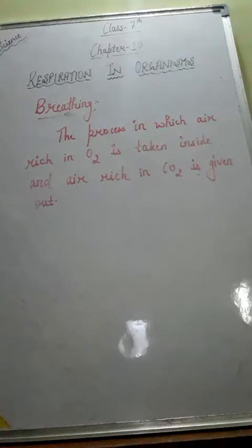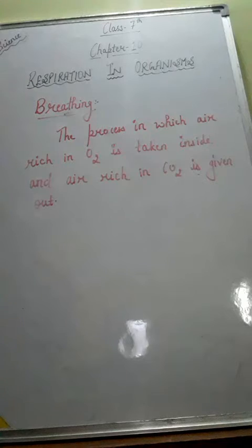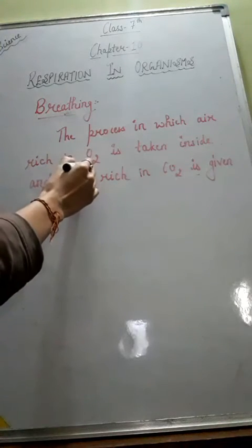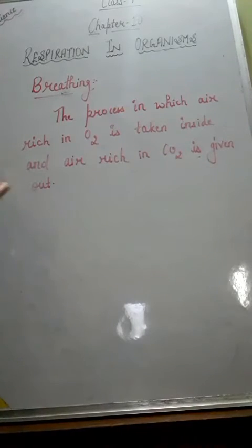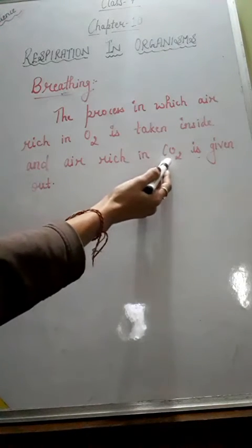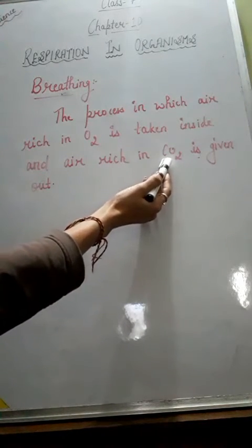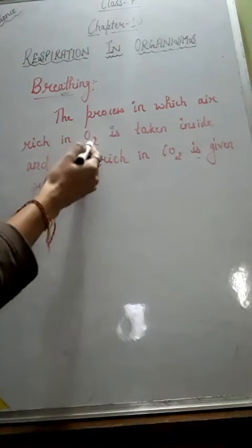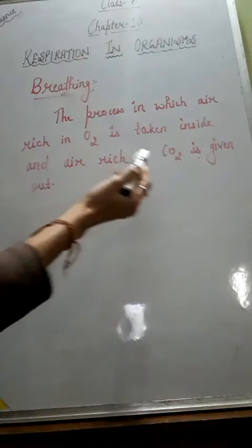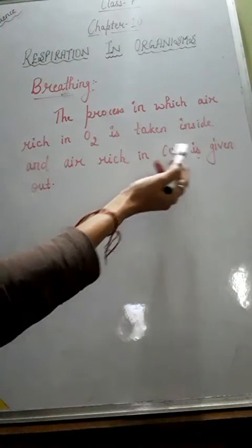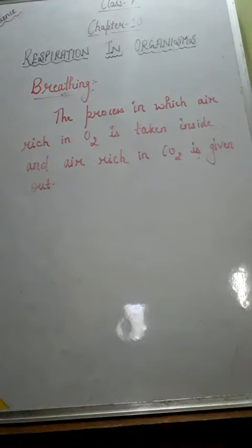So what is breathing? Breathing is generally the process in which air that is rich in oxygen — O2 is the symbol of oxygen — is taken inside, and air which is rich in CO2, that is carbon dioxide, is given out. So oxygen-rich air is taken inside and carbon dioxide-rich air is given out with the help of respiratory organs.